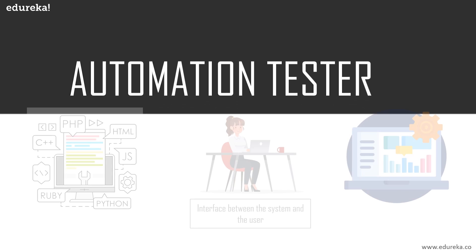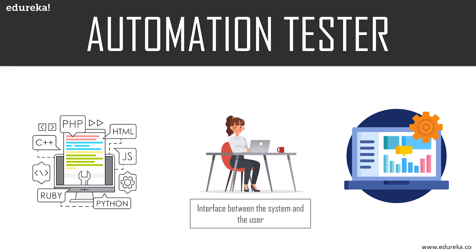What is the role of a person hired as an automation tester by any organization? This automation tester acts as an interface between the system and the UI. Any change made by this tester directly affects the system and the user interface, so this automation tester plays an integral role in testing the software. The elegant way to start building your career as a Selenium tester is by working on some real-time projects.